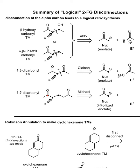Finally, when we look at this last pattern, we have a 1,5-dicarbonyl target molecule. Our disconnection is going to be at the alpha carbon, and the electrophile we need is going to be the beta carbon of an alpha-beta-unsaturated carbonyl. This carbon is partially positive, and when a stabilized enolate nucleophile attacks the beta carbon of an alpha-beta-unsaturated carbonyl, we call that the Michael reaction, and the product we get out is a 1,5-dicarbonyl.